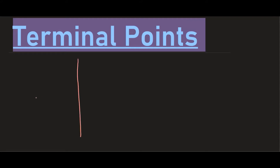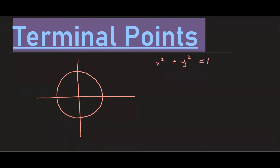Suppose we have a unit circle. The equation of this circle is x squared plus y squared equals 1, so the distance from the center to any point on the circle is 1. The point P at the rightmost position has coordinates x equals 1, y equals 0. Going counterclockwise, the next quadrantal point is (0, 1), then (−1, 0), then (0, −1), and back to (1, 0). Those are the quadrantal points on the unit circle.